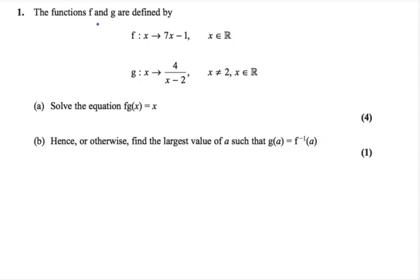The functions f and g are defined by f takes x to 7x minus 1 where x is a member of the real numbers. g takes x to 4 over x minus 2 where x is also a member of the real numbers but x cannot be equal to 2 because if x was equal to 2 then the denominator becomes 0 and we can't have that.